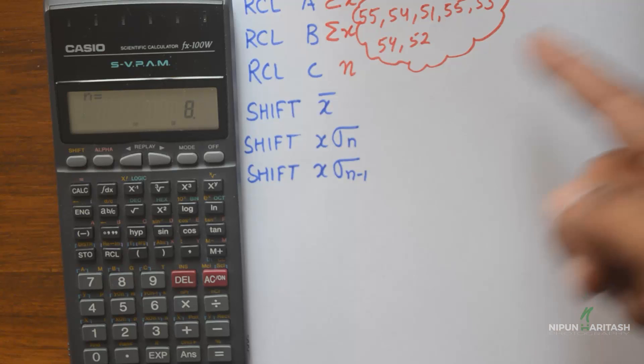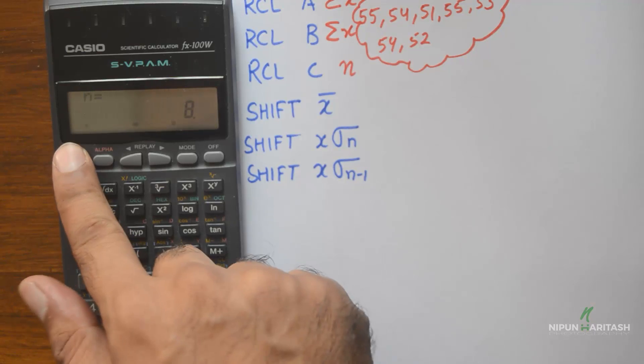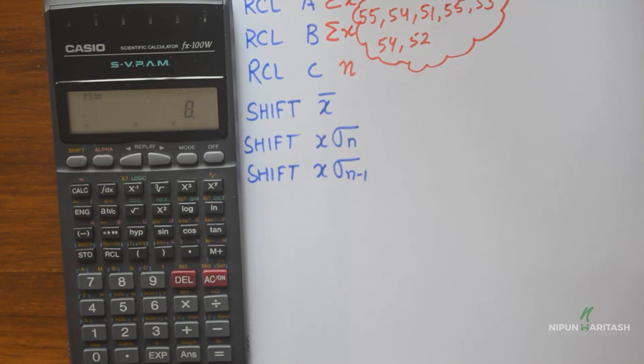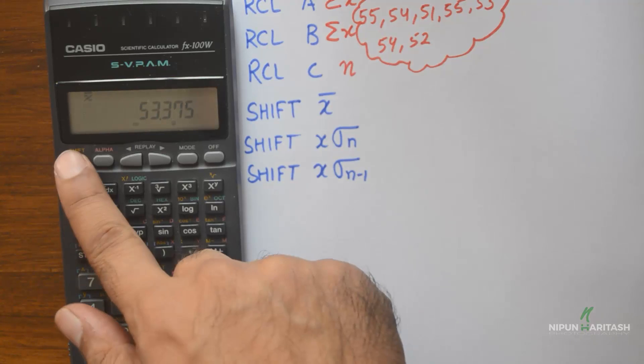Now we can use shift and the options on 1, 2, and 3, which are arithmetic mean, population standard deviation, and sample standard deviation respectively. I'll press 1, which gives me arithmetic mean, and then press equal. It gives me 53.375, which seems legitimate as the arithmetic mean of all my eight different values.